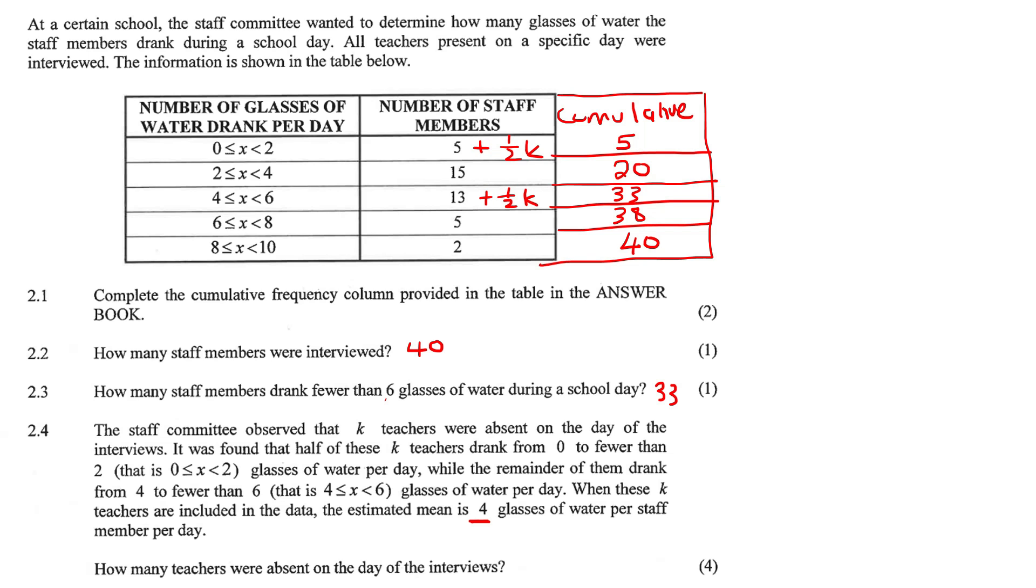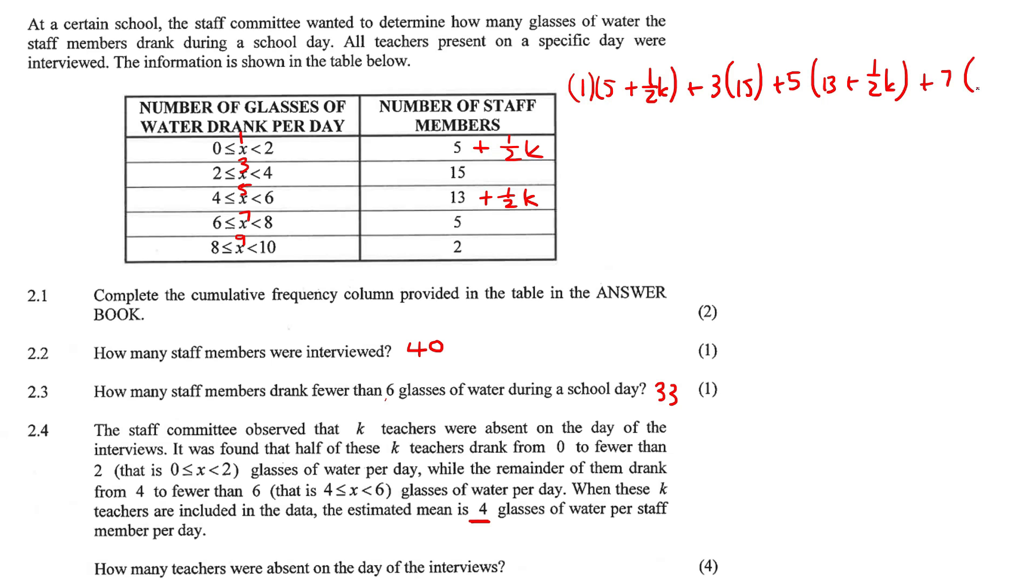So how would you normally calculate the mean? We've looked at this on a table before. You look at the mid number over here. So that's going to be one, three, five, seven, and nine. And then what we do to calculate the mean, I'm going to get rid of this quickly, is you simply say this number multiplied by this number. We've done this on tables before here, guys. So 1 multiplied by 5 plus half K plus 3 multiplied by 15 plus 5 multiplied by 13 plus half K plus 7 multiplied by 5 plus 9 multiplied by 2.